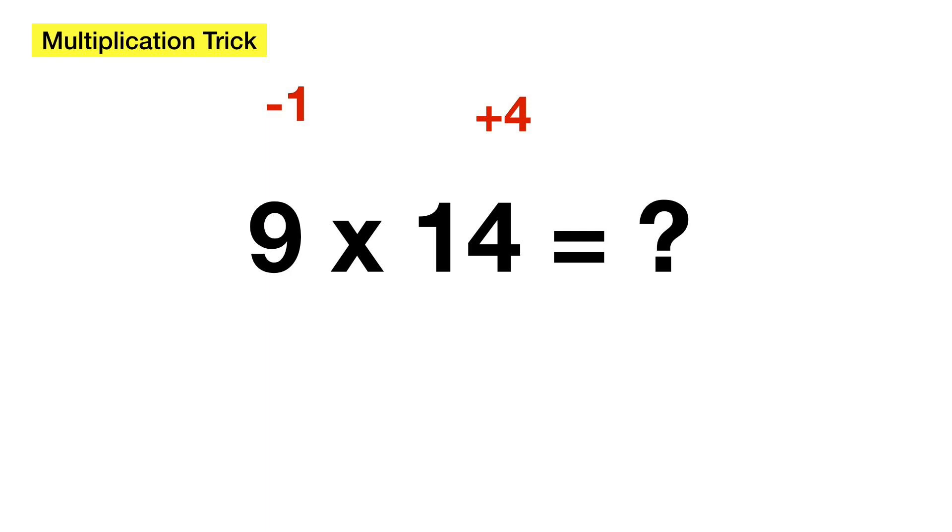Now that we have our two numbers, here's what we're going to do. We're going to do the same trick that we just did. Either we have 14 minus 1, or we have 9 plus 4. In both cases, the results will be the same, which is 13.